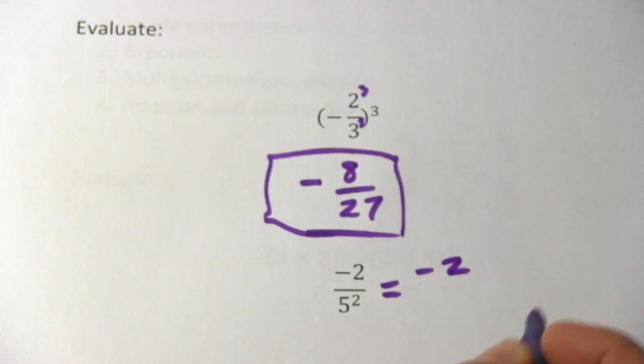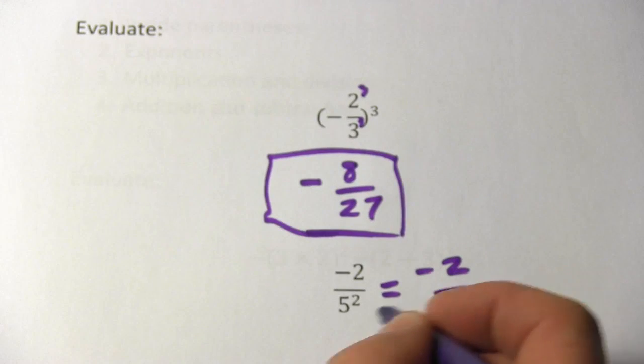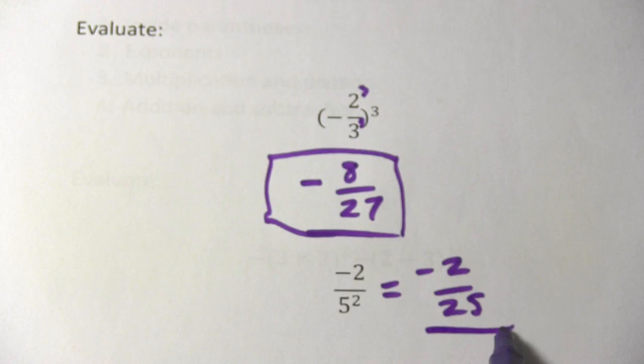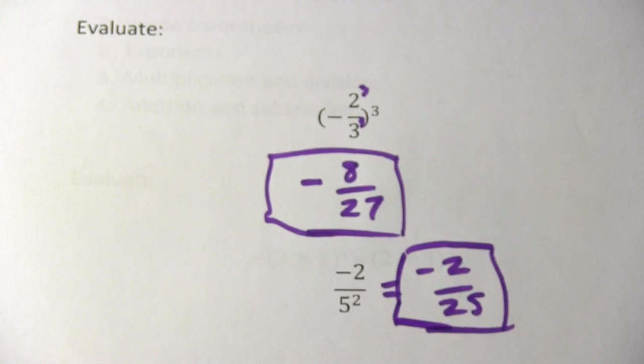So we keep the negative two on top, and then five squared is twenty-five, and our answer is negative two twenty-fifths.